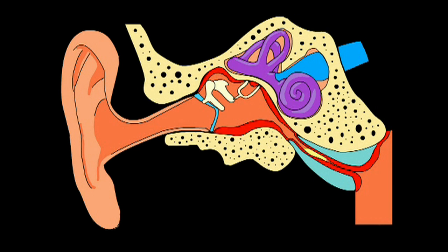If the eustachian tube becomes blocked or swollen, a vacuum of air builds up and the only elastic part of the system, the tympanic membrane, is sucked into the middle ear. The vacuum also causes thickening of the middle ear mucosa, which produces an effusion that fills the middle ear cavity. At first the fluid is thin and watery, but after a few weeks it can become thick and glue-like.